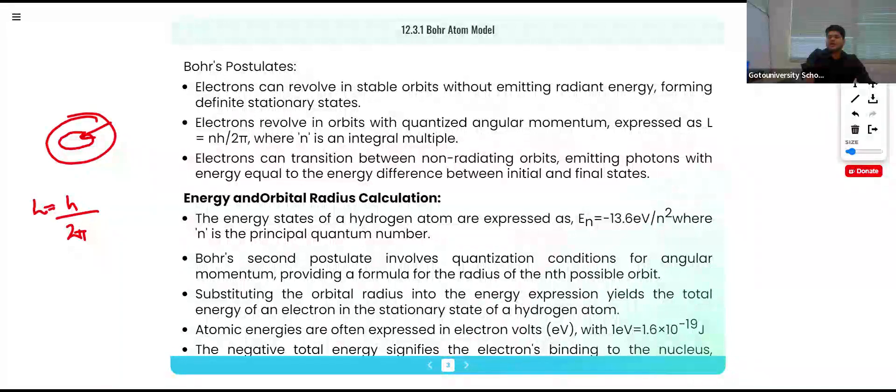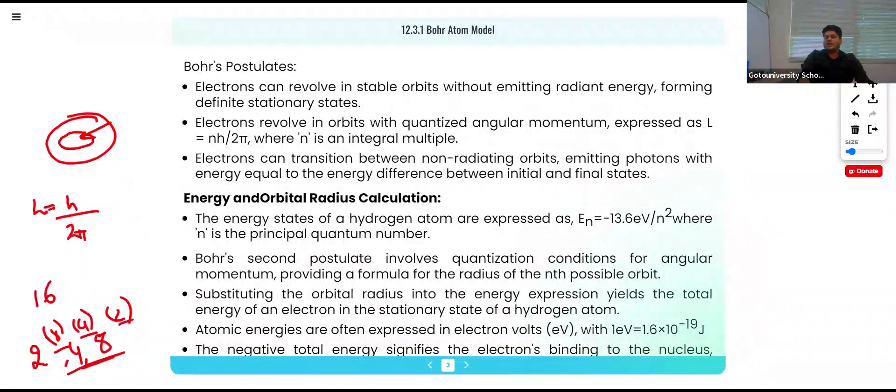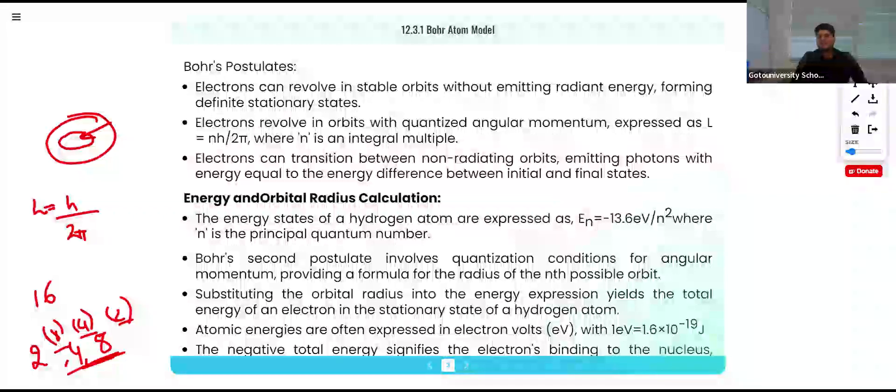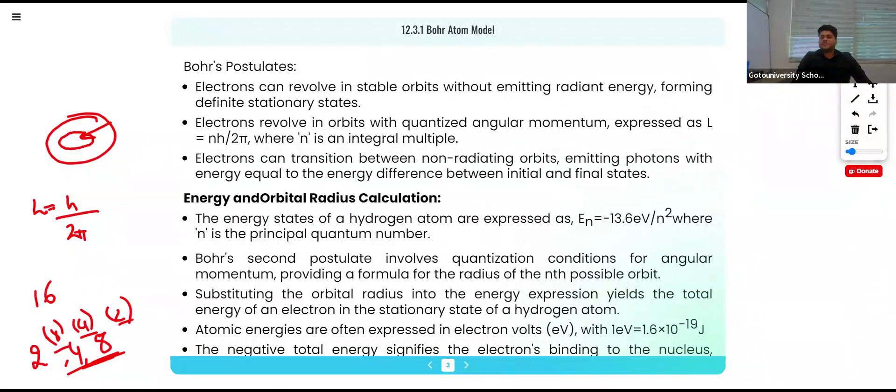The angular momentum is h upon 2π. If the value of h upon 2π is, for example, 8, then we consider 2, 4, or 8—that is, integral multiples of h upon 2π. The angular momentum must be an integral multiple of h upon 2π. Learn these three postulates; they are very important.